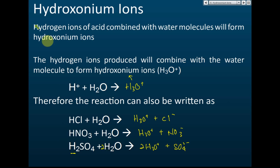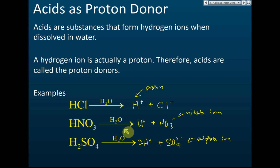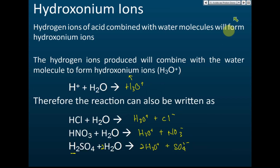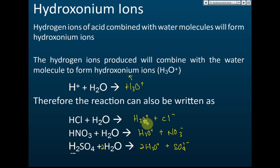To compare these equations: if you write water on top of the arrow, then when the acid dissociates it produces hydrogen ions. But if you write water as a reactant in the equation alongside the acid, then the product is hydroxonium ions instead of hydrogen ions. So the placement of water — above the arrow or as a reactant — determines whether the product is written as H+ or H3O+.